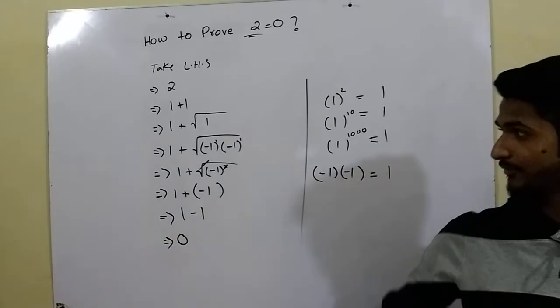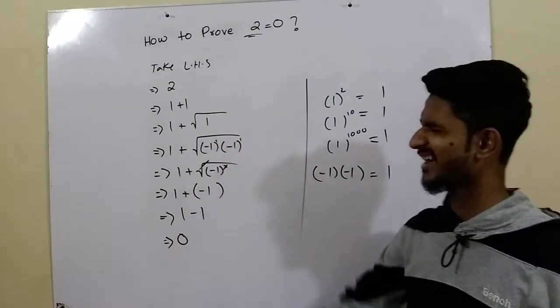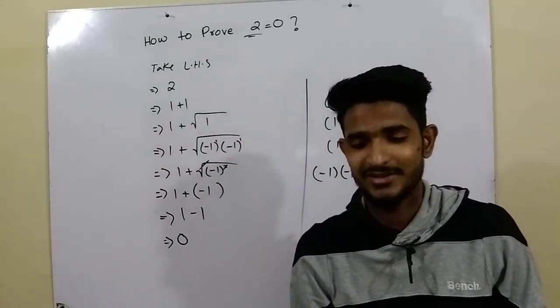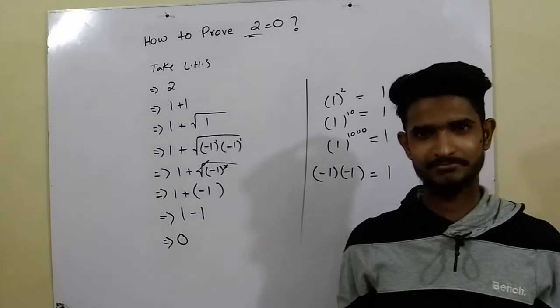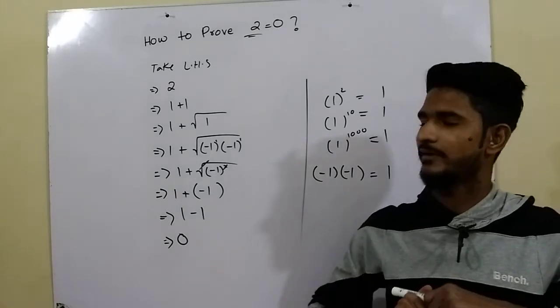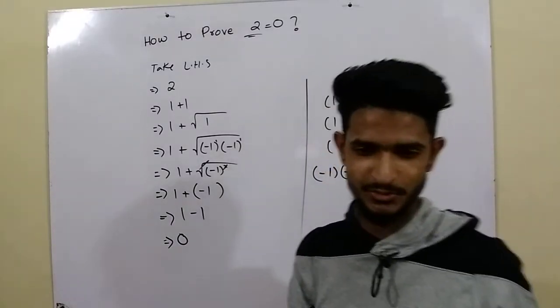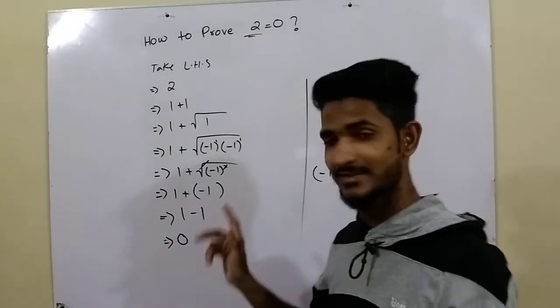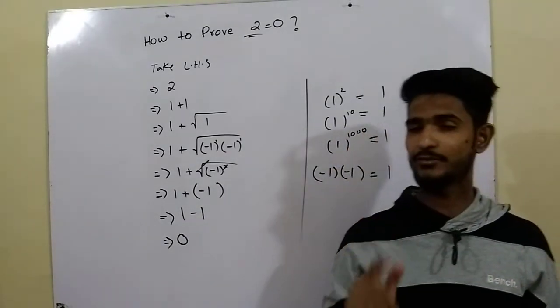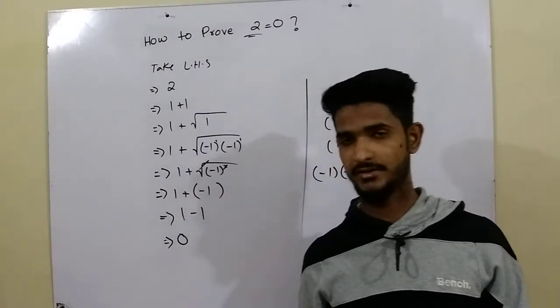So, we have finally proved that 2 is actually equal to 0, which is theoretically not possible. So here is a task to you. Find the error in this equation and do comment if you find any of them. I really appreciate this one.